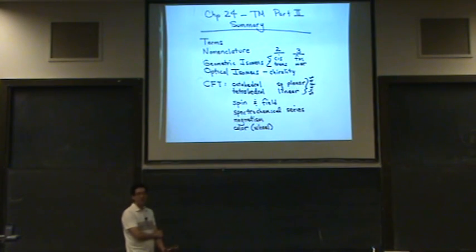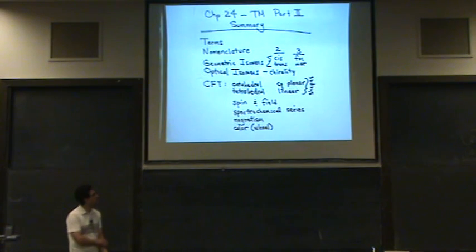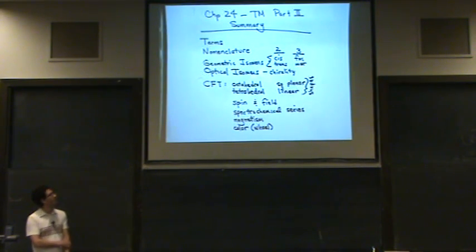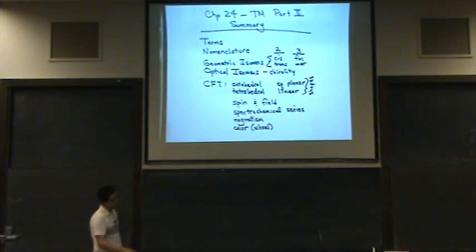And then magnetism. There's two types: paramagnetic and diamagnetic. Paramagnetic means there's unpaired electrons. Diamagnetic means electrons are paired. To be able to tell the difference after you draw the diagram.